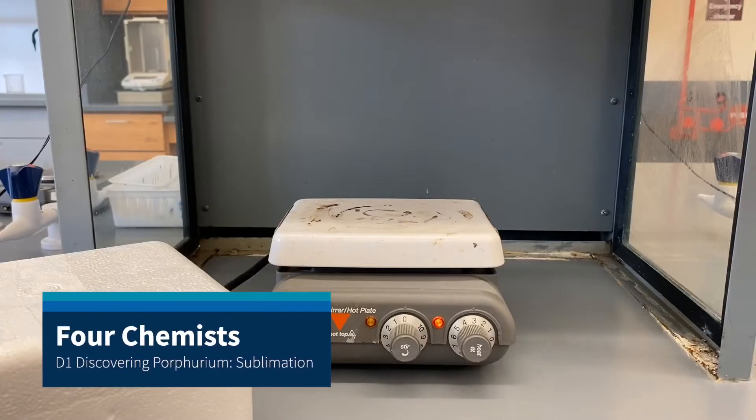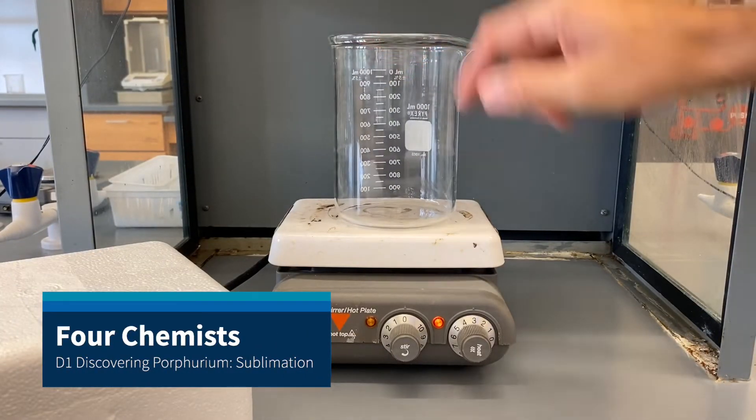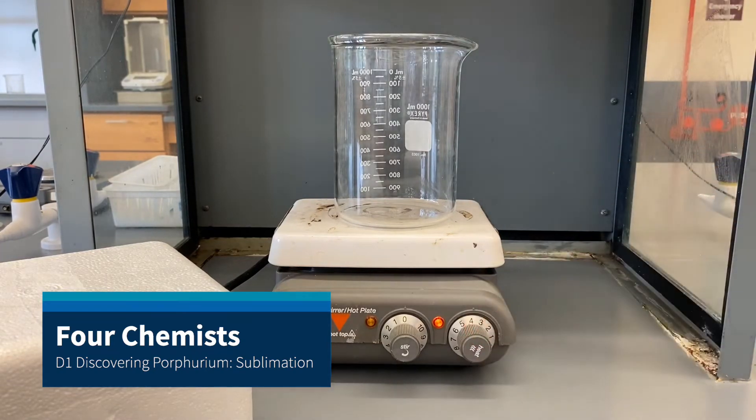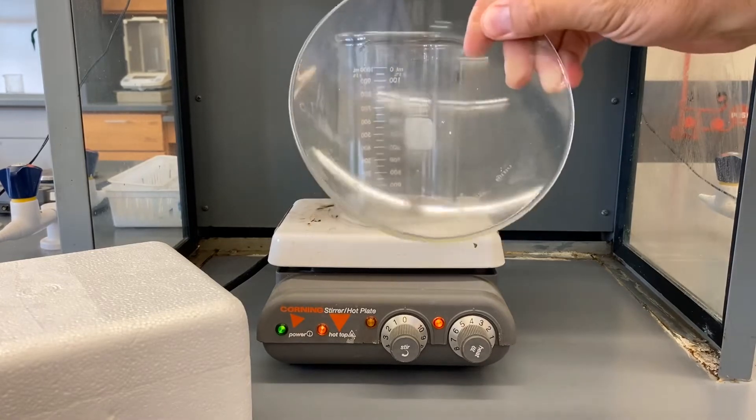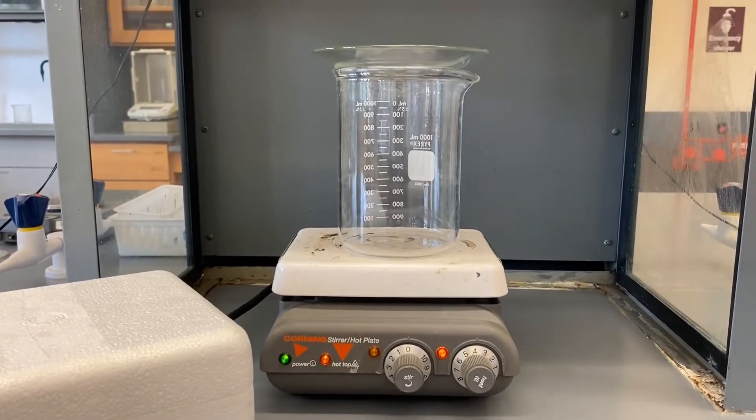Okay, here's the setup for D1. Start with the beaker. The hot plate's on so it's nice and warm. And then we've got a watch glass which just covers the top of the beaker. See that a little bit better.